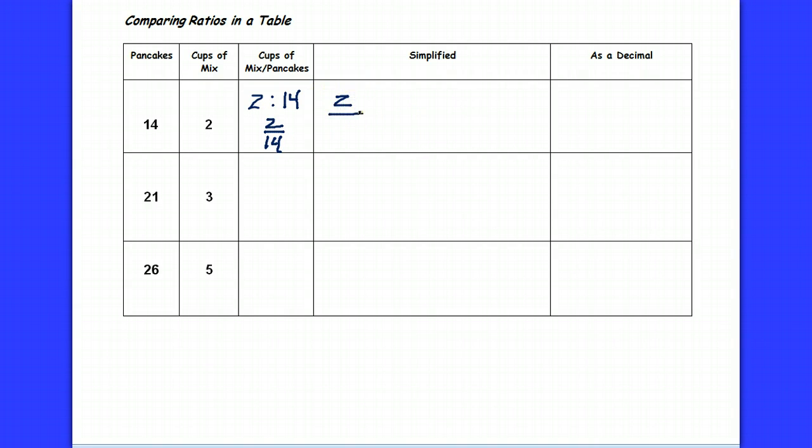Let's simplify that down to the lowest fraction by dividing the top and bottom by the greatest common factor. 2 divided by 2 and 14 divided by 2 gives me 1 over 7, or 1 to 7 cups of mix to pancakes.